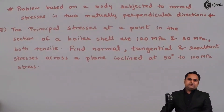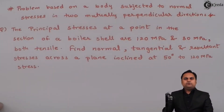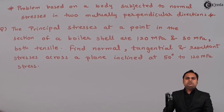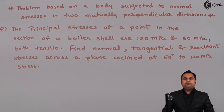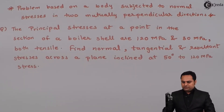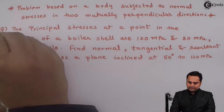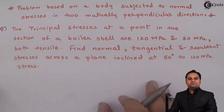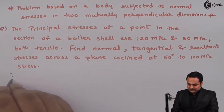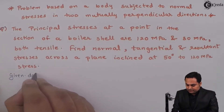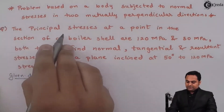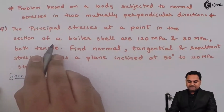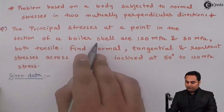Hello friends. In this video we are going to see a problem in which a body is being subjected to two mutually perpendicular stresses. This question belongs to principal stresses and planes. I'll write the data: the principal stresses at a point in the section of a boiler shell.